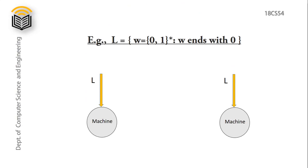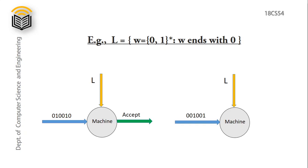Let's understand this with a simple example. Consider language L consisting of W with 0 and 1, having the definition that W ends with 0. The input 010010 is accepted by the machine as it satisfies the definition. But when we give 001001 as input, the machine will reject it as it fails to satisfy the definition.